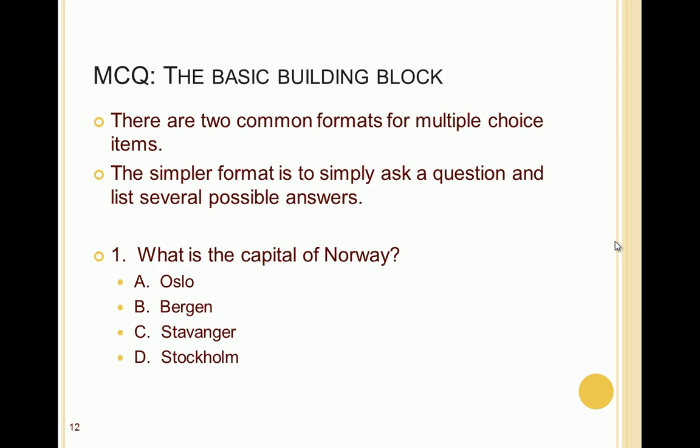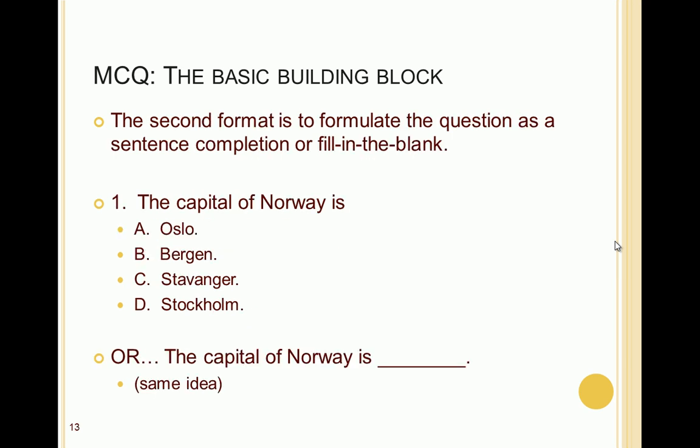There are two common formats for presenting a multiple choice item. The simpler format is to ask a direct question and list several possible answers — for example, 'What is the capital of Norway?' with the stem phrased as a direct question and each answer providing a possible response. The second format is a sentence completion or fill-in-the-blank, where the same information is formulated differently: 'The capital of Norway is ___: Oslo, Bergen, Stalinger, or Stockholm.'